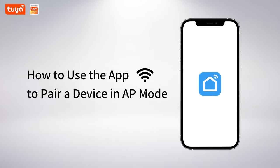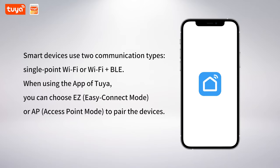How to use the app to pair the device in AP mode. Smart devices use two communication types: single point Wi-Fi or Wi-Fi plus Bluetooth. When using the Tuya app, you can choose Easy Connect mode or AP (Access Point) mode to pair the devices.